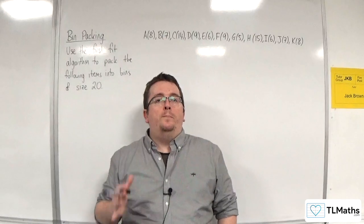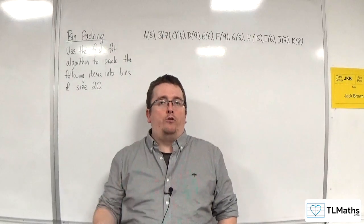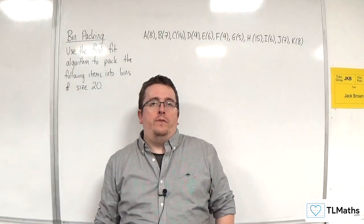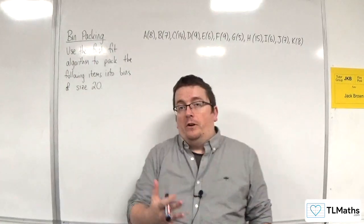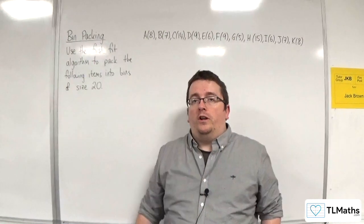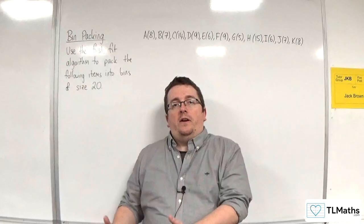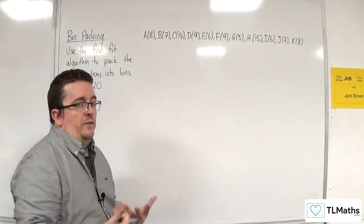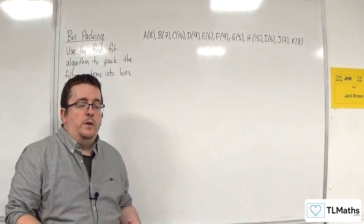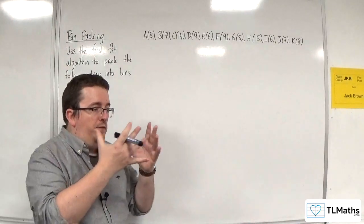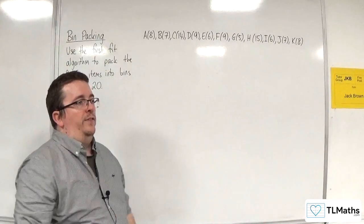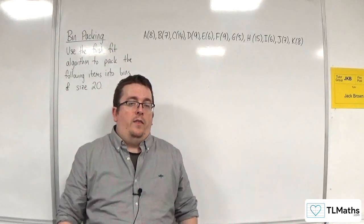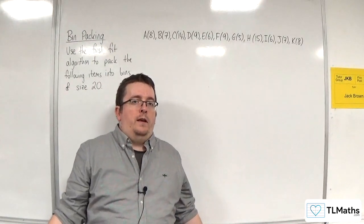The first of two bin packing algorithms we're going to consider is the FirstFit algorithm. It pretty much spells out what you're going to do. Consider that these items are coming along on a conveyor belt, and you're just going to take them off and put them into the first available bin. That is what FirstFit is all about.